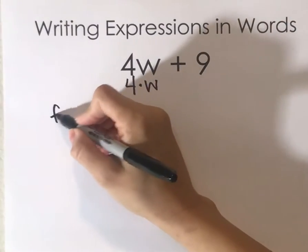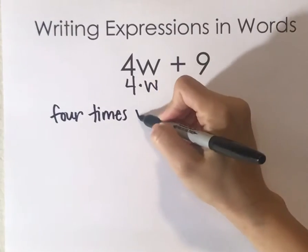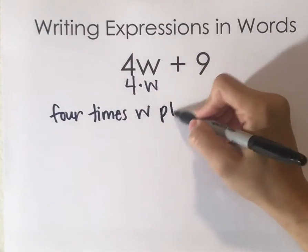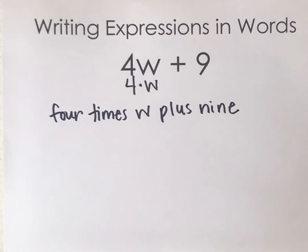...is you could say four times W. And then you have to represent that symbol. You could say plus nine. And that's how you would say that.